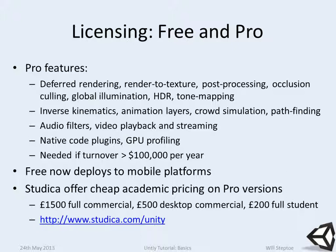If people are interested in buying it and you're a student — or you have students — a company called Studica offers quite cheap academic pricing. You can get a full commercial license including iOS and Android platforms for one thousand five hundred pounds. That's typically around four thousand pounds if you buy direct from Unity. Pro desktop-only is five hundred pounds, and if you're lucky enough to be a student it's two hundred pounds for the full license including iOS and Android deployment. Note that the student license lasts only one year, whereas the other two are forever licenses.